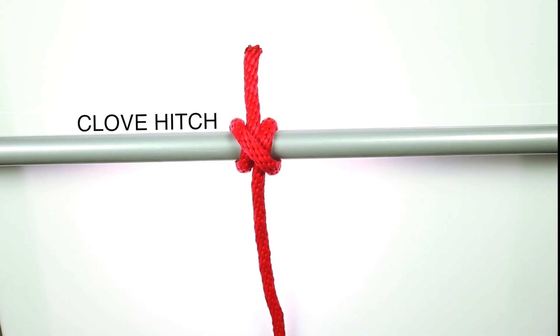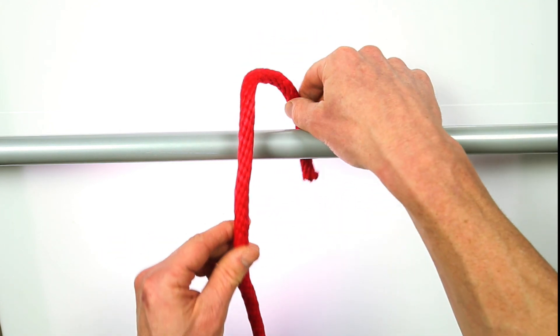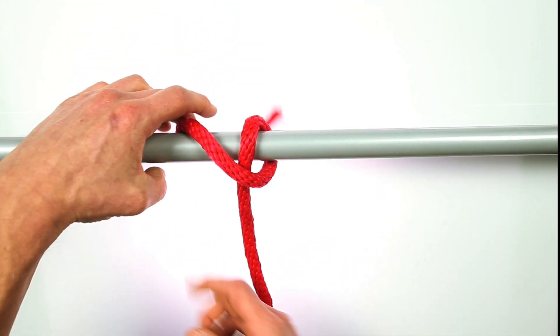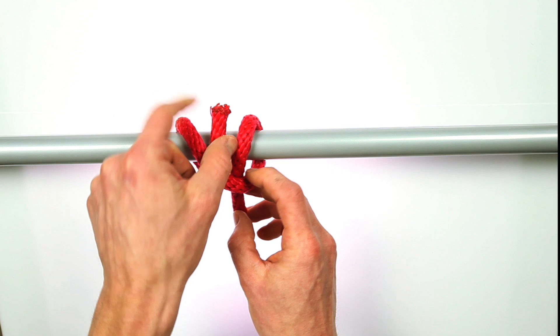Next, clove hitch. It's good for tying a rope to a pole or, say, putting your fenders out. First, come up and around. Then over the loop you just made. And then you want to come around again and under to lock the loose end when you tighten.